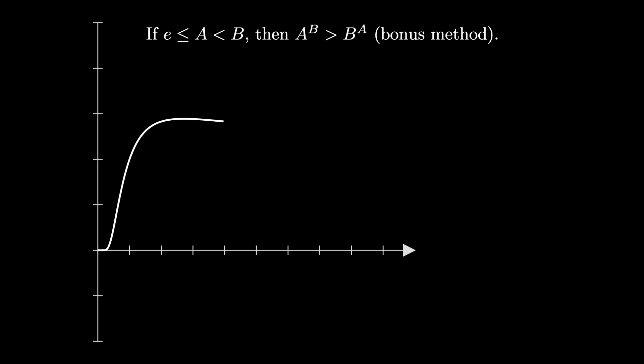The suggestion is to plot the function y equals x to the 1 over x. Then you can find the maximum of this function by figuring out where the derivative y prime is 0. It turns out this happens if and only if x equals e, as is shown here. You can also show that the derivative is less than 0 when x is greater than e, and that means that this function y is decreasing when x is greater than e.